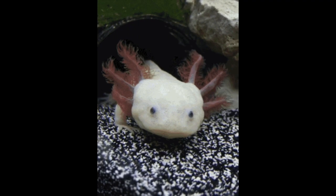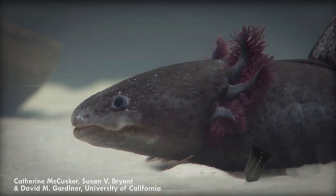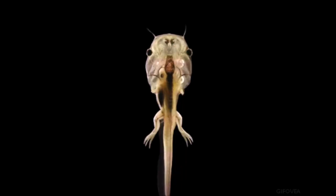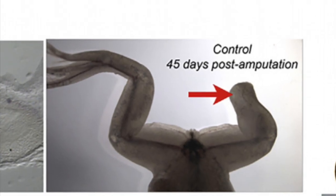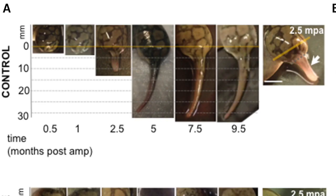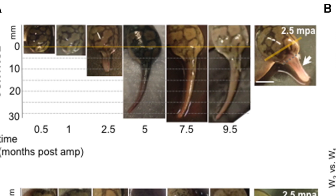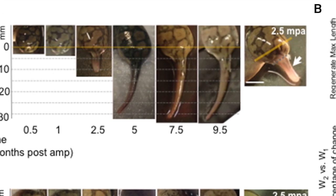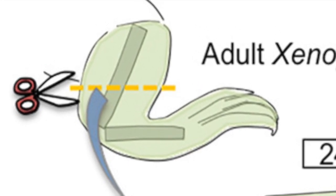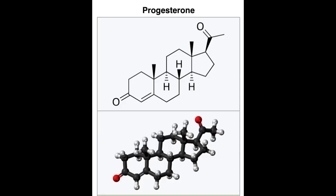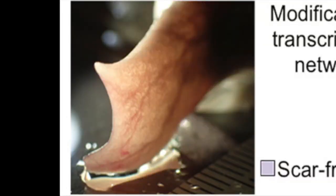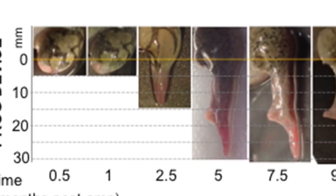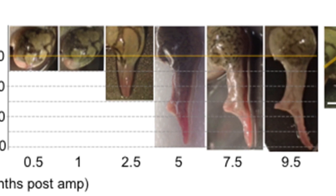Now for frogs. Frogs can't regenerate limbs, unlike their amphibious counterparts the axolotl. They lose this ability when they undergo metamorphosis from a tadpole to a frog. This is what some of their attempts at regeneration look like after amputation — you can see this one grows a little, but it's mostly scar tissue and not a usable limb. But if you amputate this limb and then attach a bioreactor containing progesterone, which is a potent neurosteroid that promotes nerve repair, then the limb starts to regenerate. This is what the regeneration of the frog's limb looks like over 9.5 months.